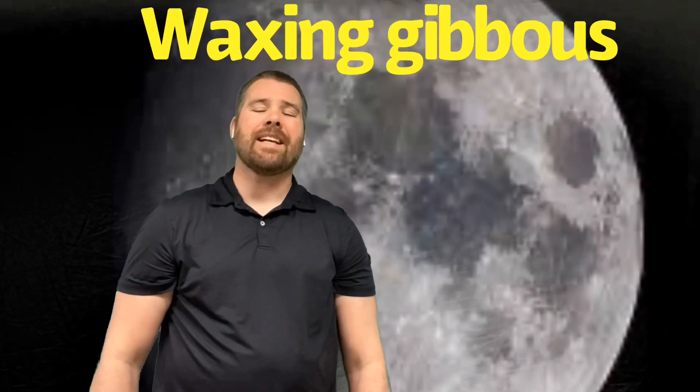This right here is what we call a waxing gibbous. As you can see, more than half of the moon is lit up. Now, the light kind of makes the shape of a football. So, it's that simple, right? So, as you can see, we're slowly growing, slowly growing, slowly growing. I wonder what comes next. Just wait and see.